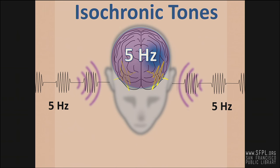Combining the effects of light and sound entrainment, audiovisual entrainment uses flashes of light and pulses of tones to guide the brain into various states of brainwave activity. Audiovisual entrainment devices are often termed light and sound machines or mind machines.